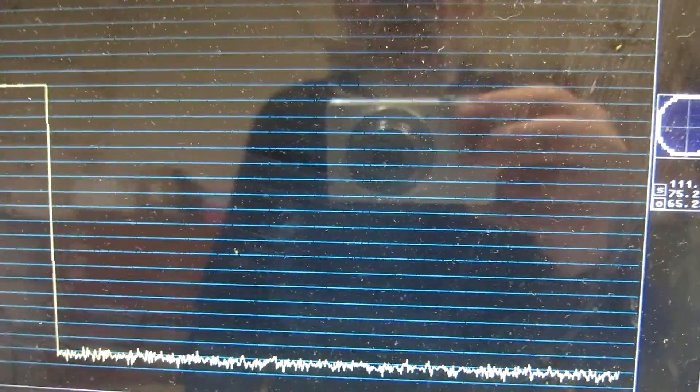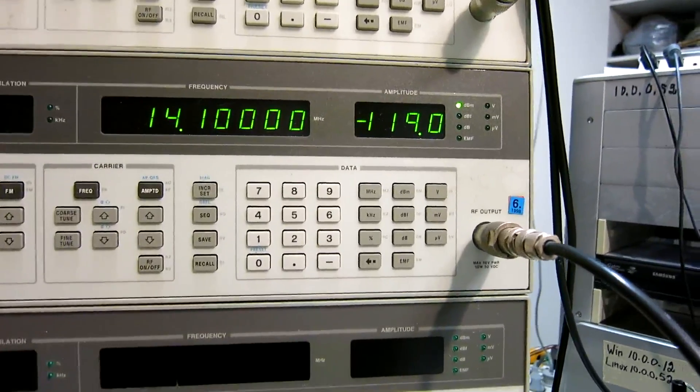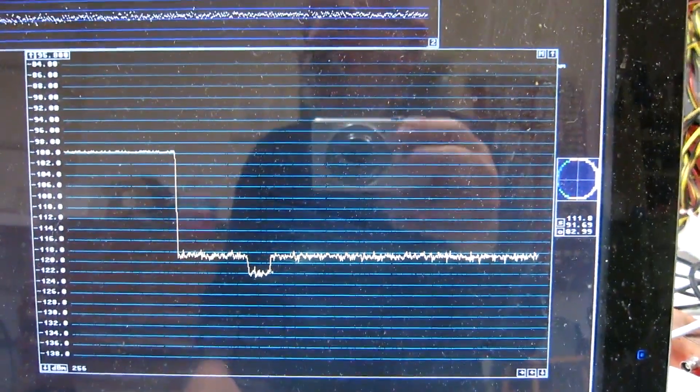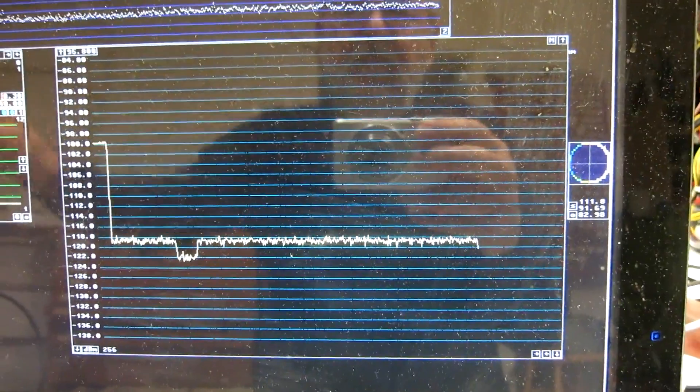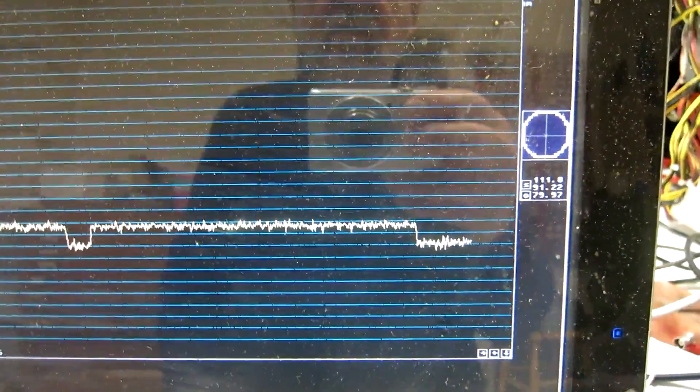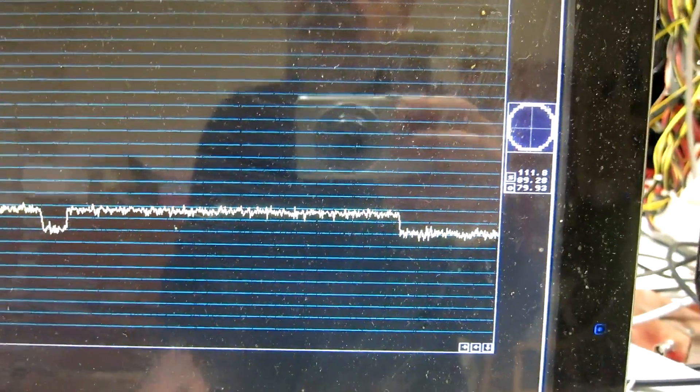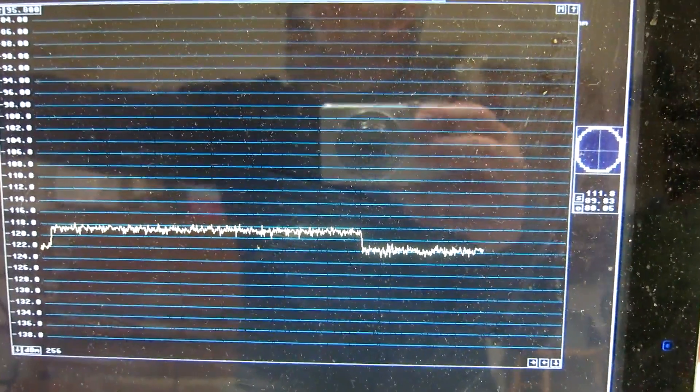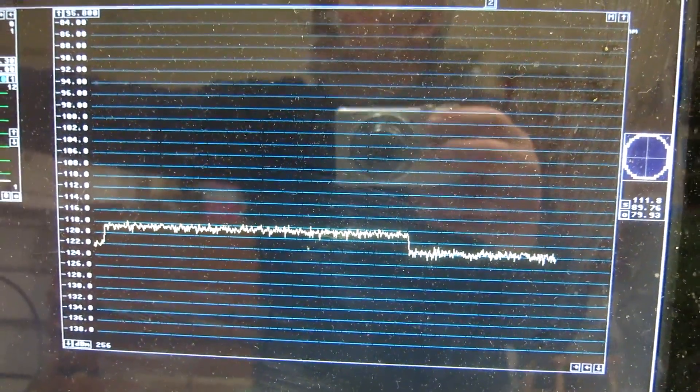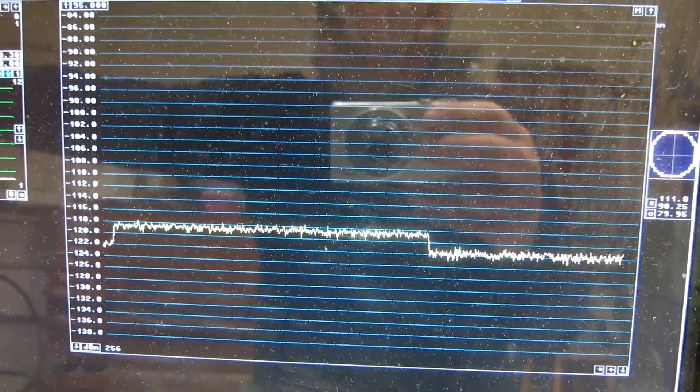Now, what is more interesting, I think, is the dynamic range. I have now set the signal generator to minus 119, and I'm listening to the Perseus, and switch off the signal. And as you can see, the signal plus noise to noise is about 3 dB, means signal and noise are the same. So I use this 3 dB signal plus noise to noise as kind of a reference.